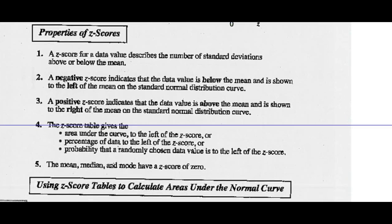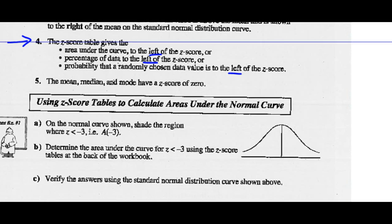Properties of Z-scores: a Z-score for a data value describes a number of standard deviations above or below the mean. A negative Z-score indicates the data value is below the mean and is shown to the left of the mean on the curve. A positive Z-score indicates the data value is above the mean and is shown to the right of the mean on the standard normal distribution curve. Note the mean, median, and mode all have a Z-score of zero.